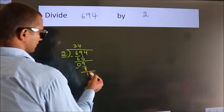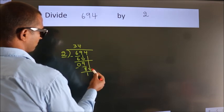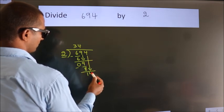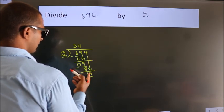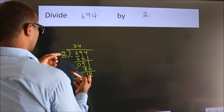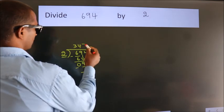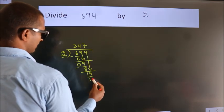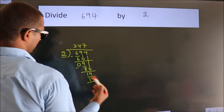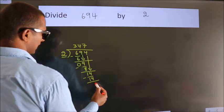After this, bring down the beside number. So 4 down. So 14. When do we get 14? In 2 table, 2 times 7, 14. Now we subtract. We get 0.